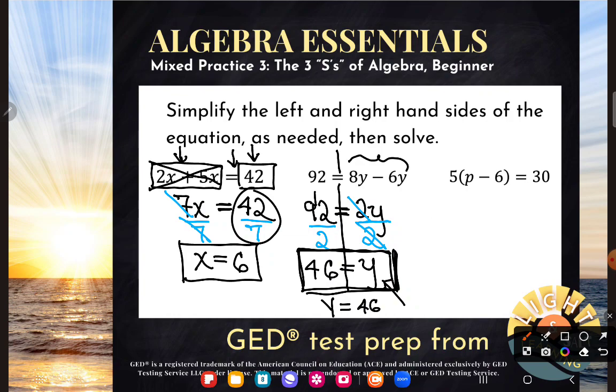All right. Next example. 5 times the quantity of p minus 6 is equal to 30. Now we've actually learned another way to tackle problems like this. If you hit it at the experience or advanced level, you've learned another way, but that's okay. I just want to point out to you that this 5 here is shoved up against this p minus 6 on the left hand side. And we have learned how to simplify things like that. We've learned to do this multiplication.